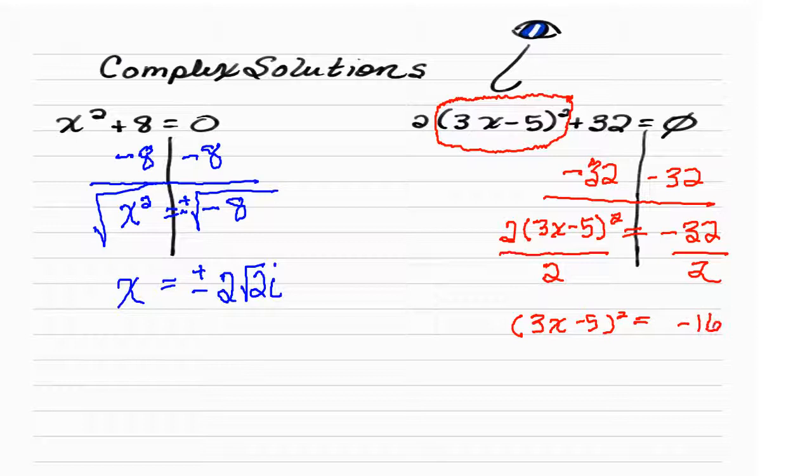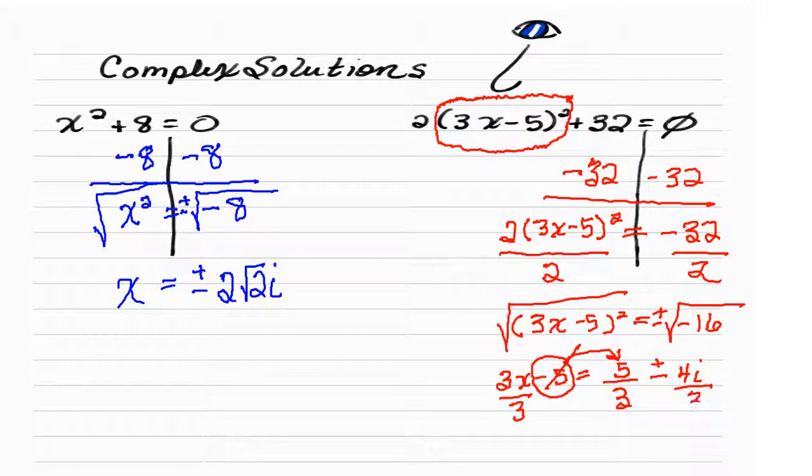Divide out the 2 gives us (3x minus 5) squared equals negative 16. So now we're going to square root, plus minus square root the negative 16. Everybody comes out and we get 3x minus 5. So I'm going to leave a little space here because there's stuff going on. Plus minus square root 16i which we know is 4i. Now we said there's a reason why we try to keep the real stuff first, the imaginary stuff second. 5 is going to jump the fence, he's a positive 5. And of course now we have to divide out the 3.